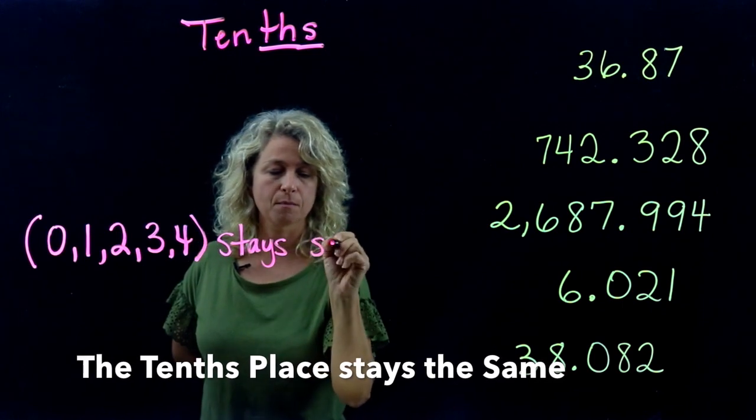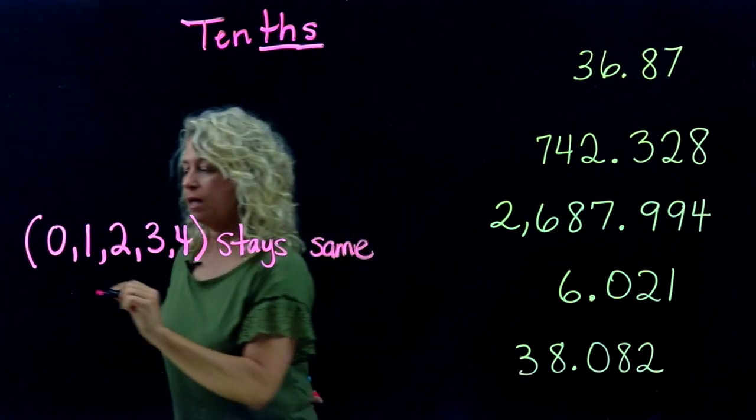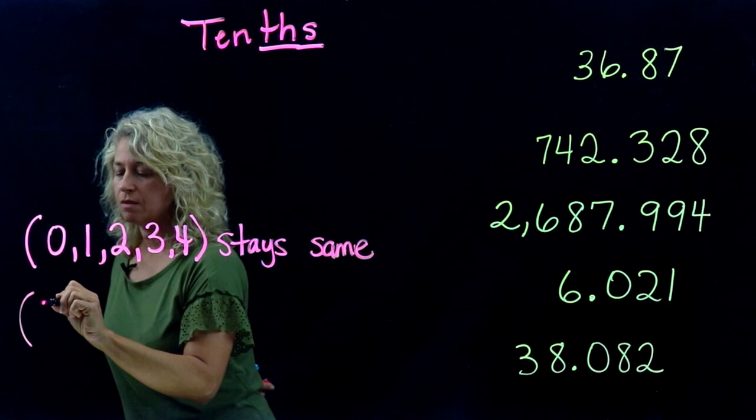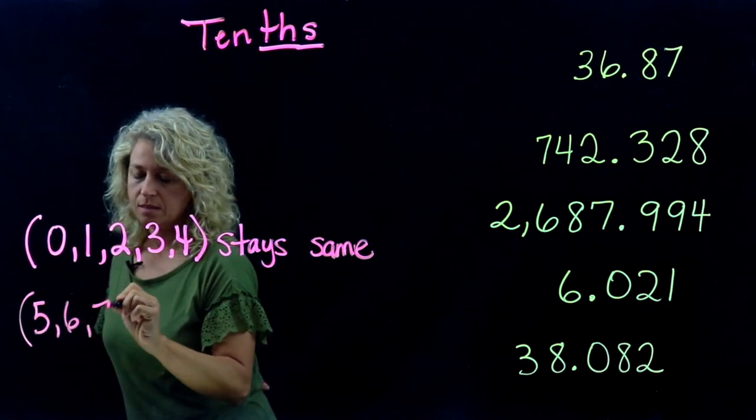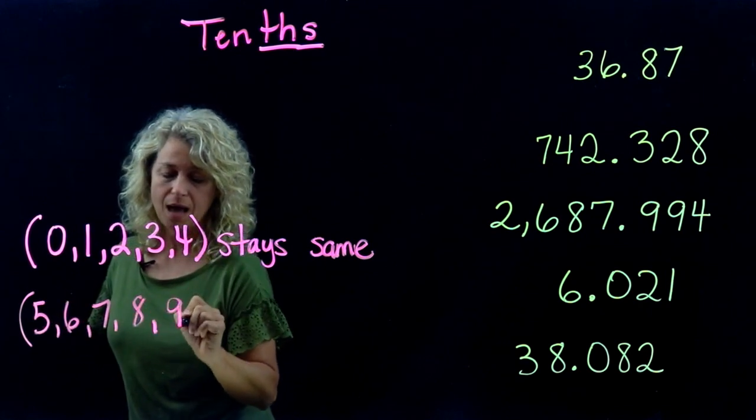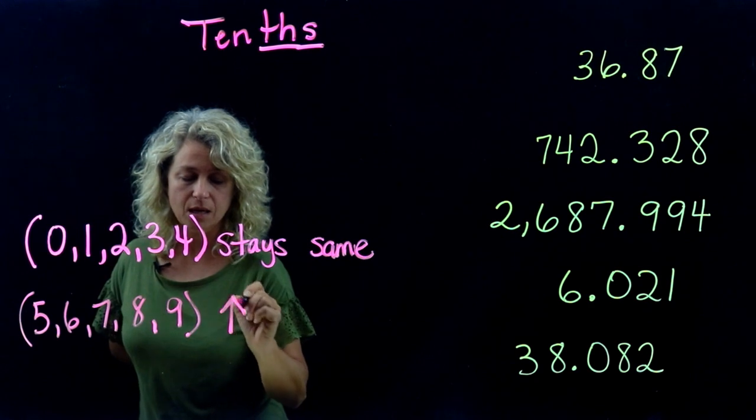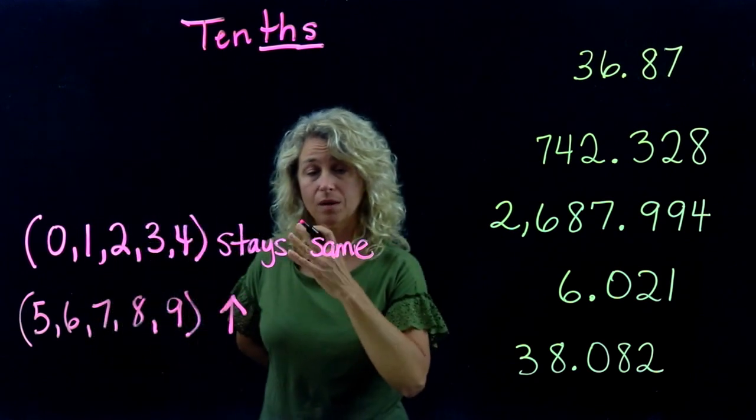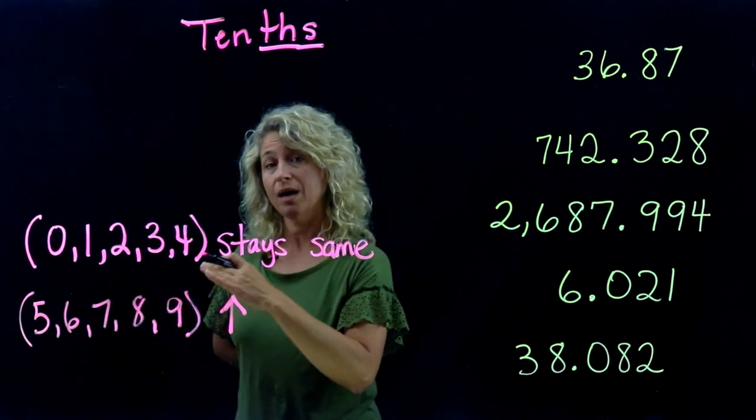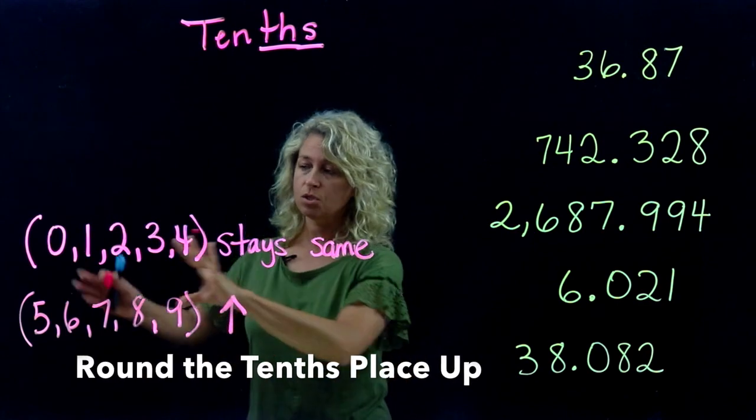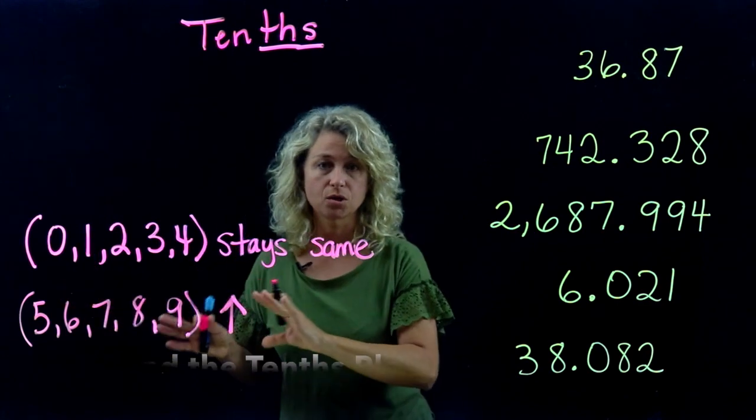If we have a number that is 5, 6, 7, 8, or 9, it tells us that we will round up. This is important background information you have to know in order to round.